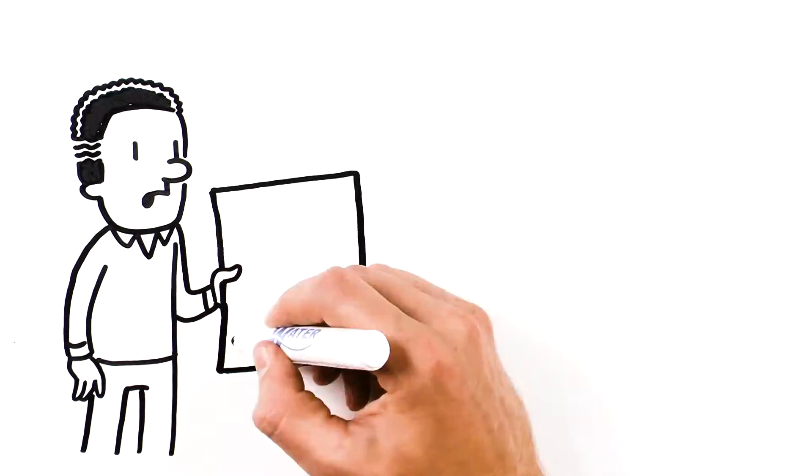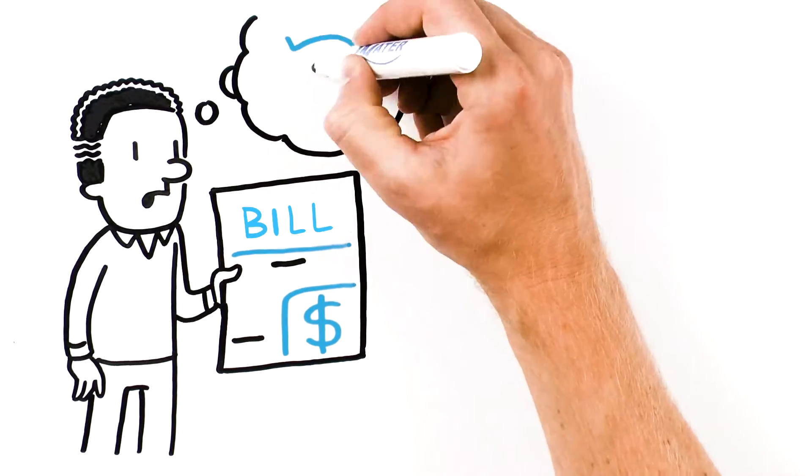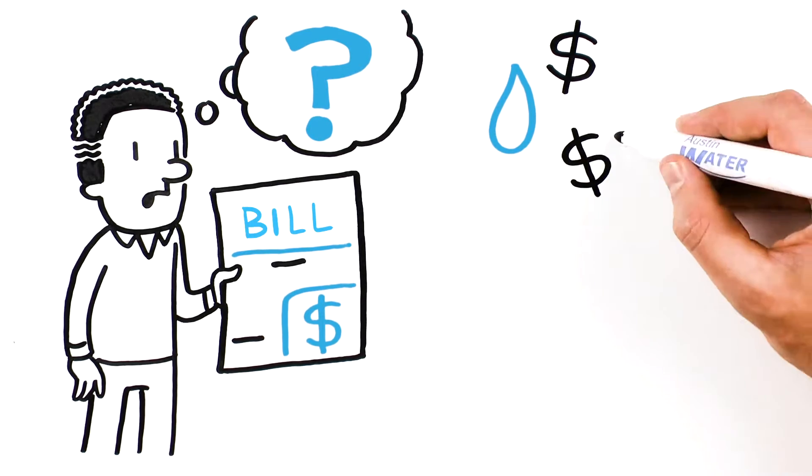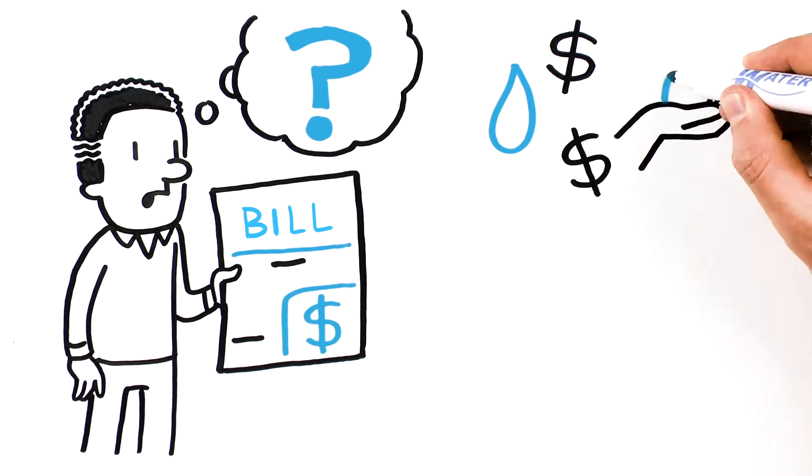Each month your utility bill arrives. Ever wonder what goes into the price of your water? Austin Water sets rates that cover the cost of providing your water and wastewater services.